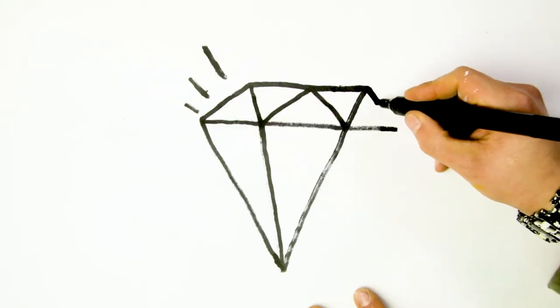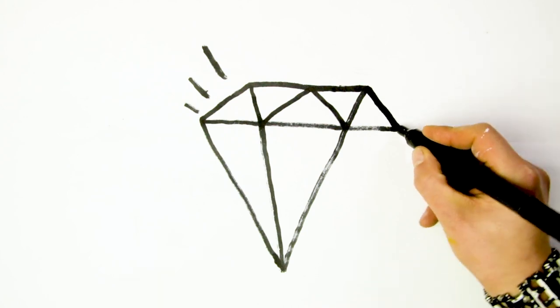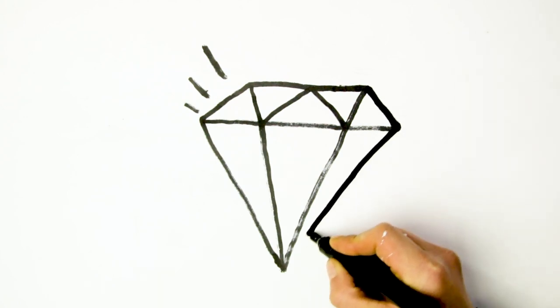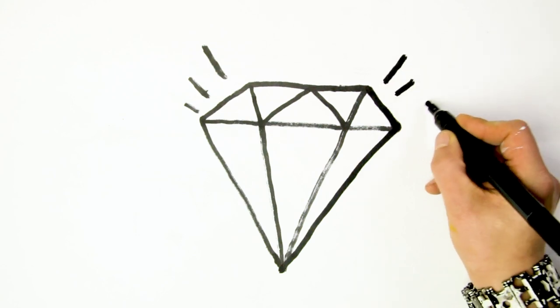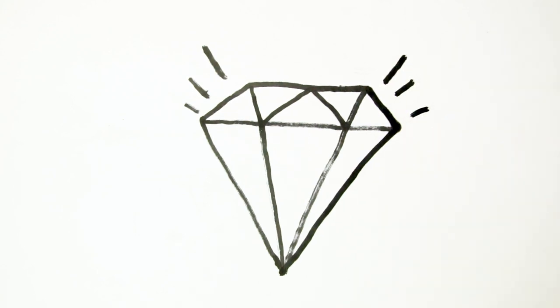It was Jules Stein and Leo Robin who wrote men grow cold as girls grow old and we all lose our charms in the end. But square cut or pear shape, these rocks don't lose their shape. Diamonds are a girl's best friend. Now let me tell you about my best friend.